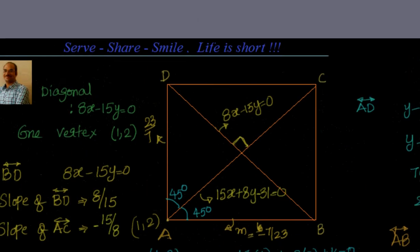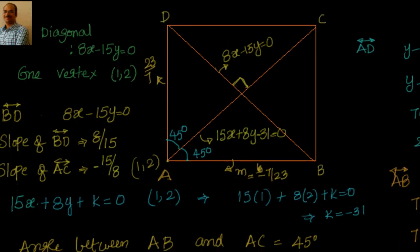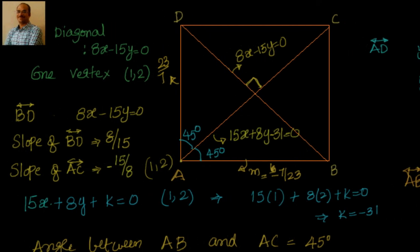Let's summarize. We were given just one diagonal equation and one vertex, and we leveraged the properties of the square to find the equations of the sides passing through vertex (1, 2). Since (1, 2) does not satisfy 8x minus 15y equal to 0, it lies on the opposite diagonal, and we found the other diagonal AC: 15x plus 8y minus 31 equal to 0.